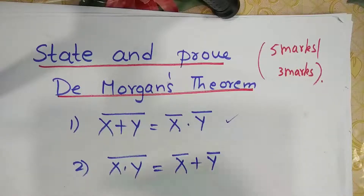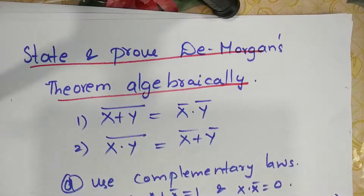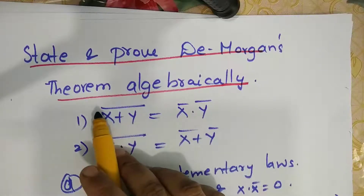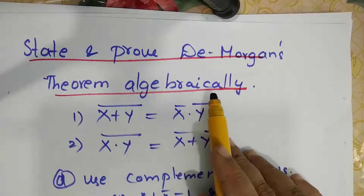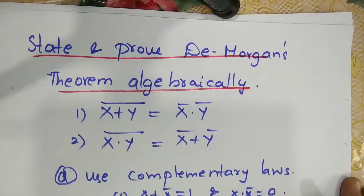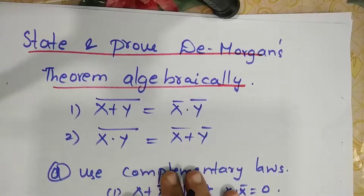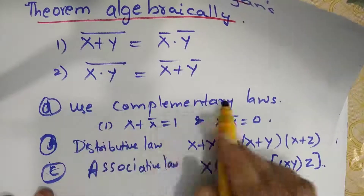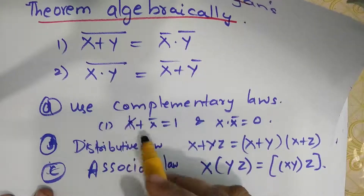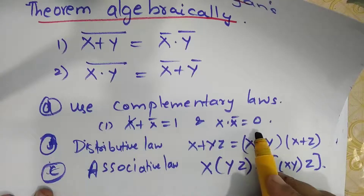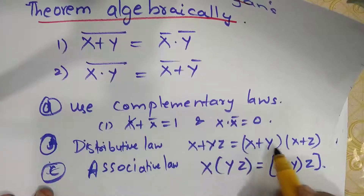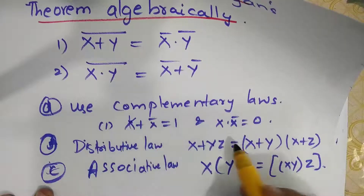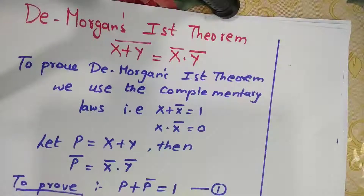Now let us first prove the first theorem and then go to the second. To prove De Morgan's theorems, we use three laws: the complementary laws (x + x' = 1 and x · x' = 0), the distributive law (x + yz = (x + y)(x + z)), and the associative law (x · yz = xy · z).